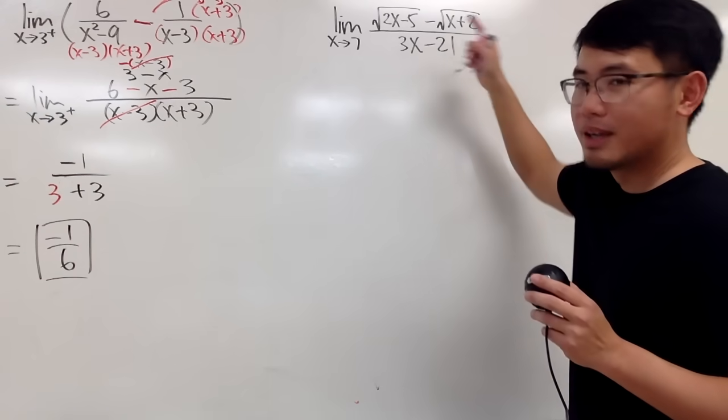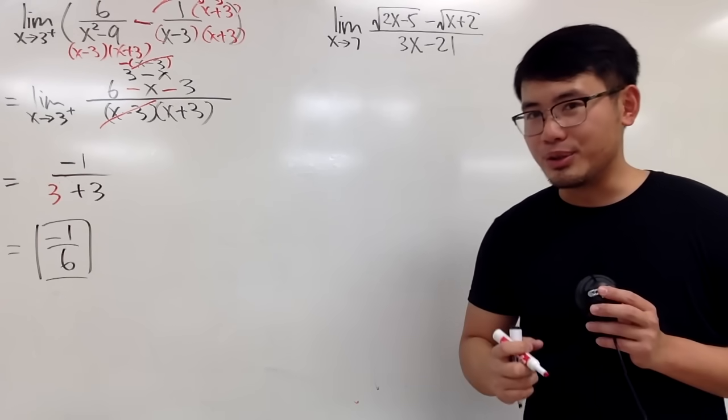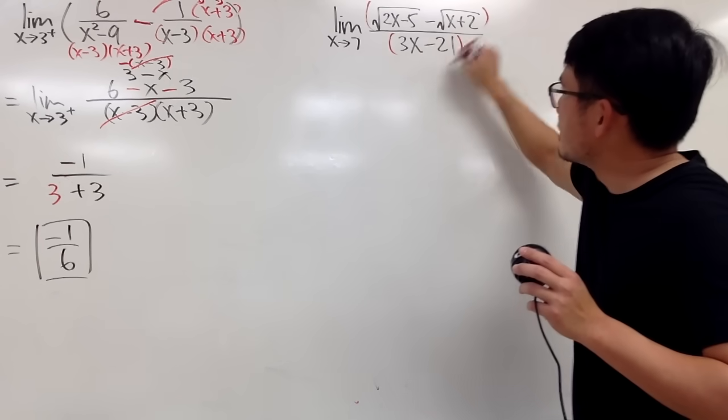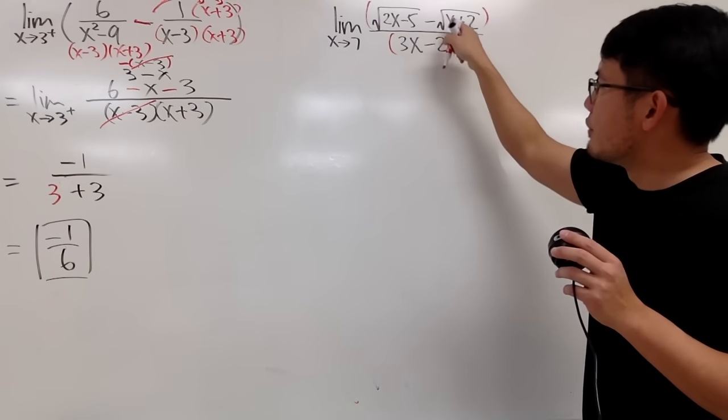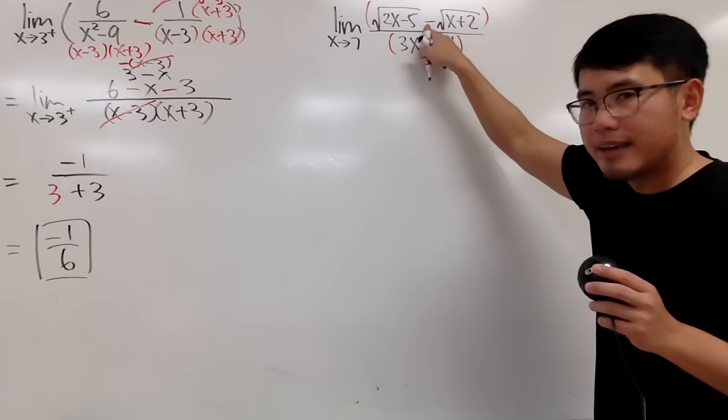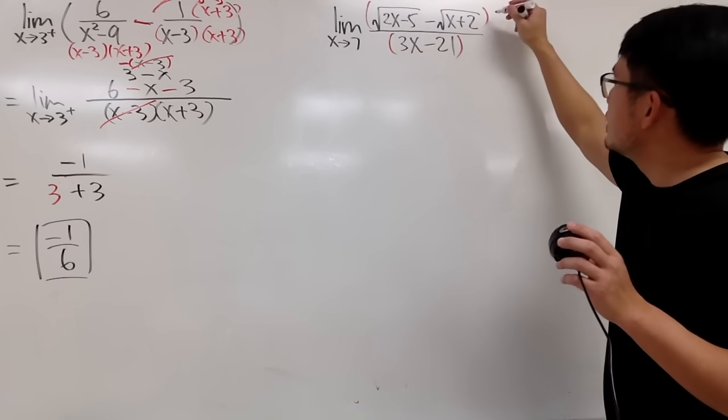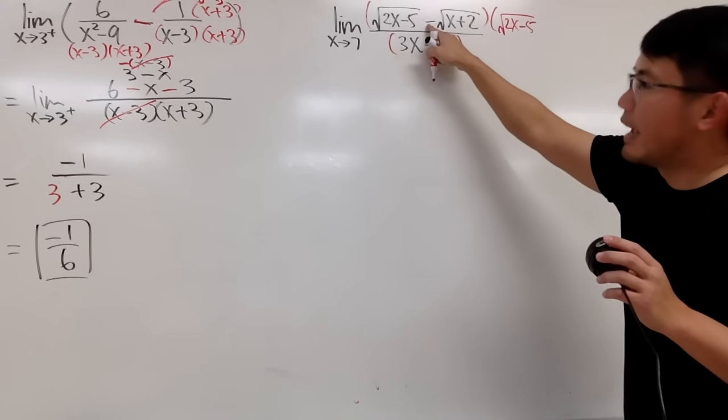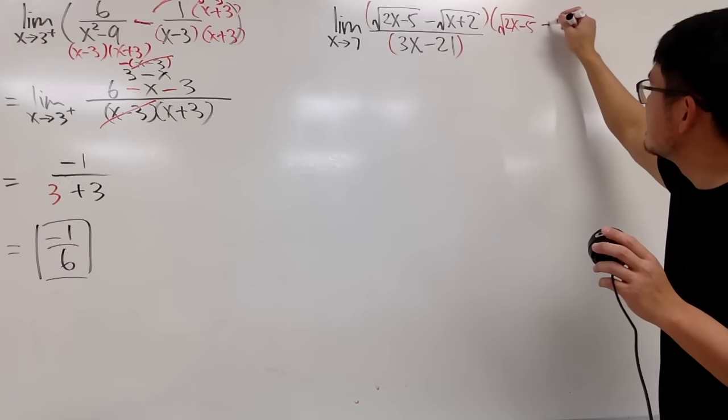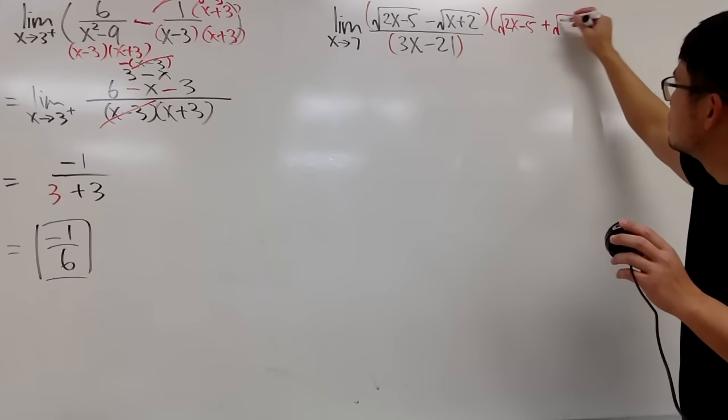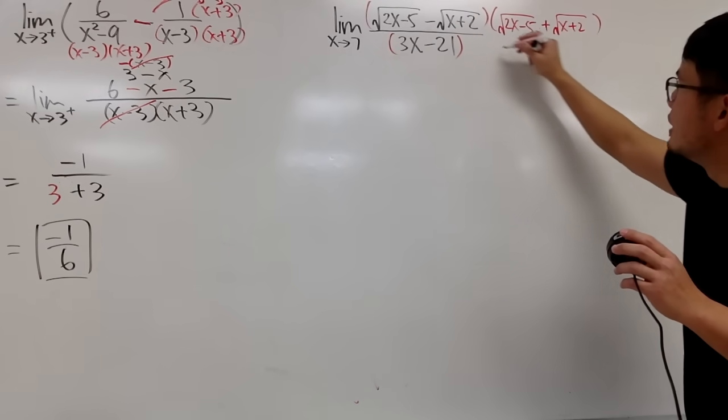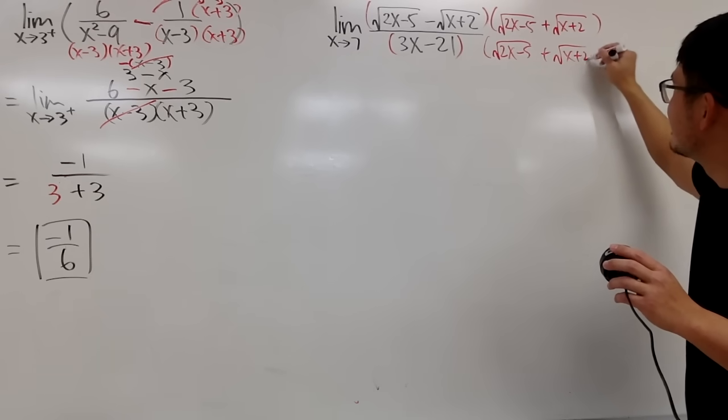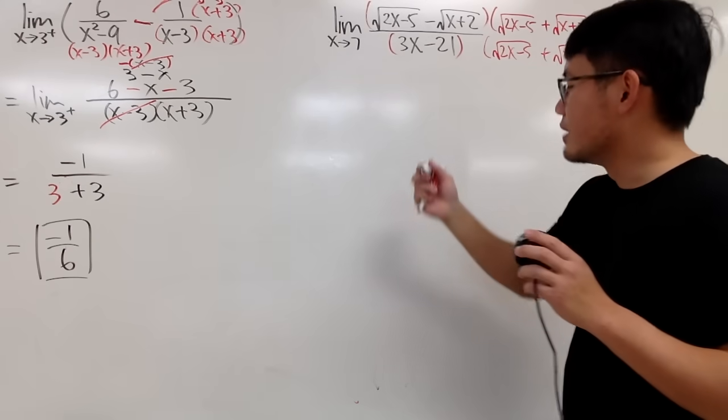Let me just multiply the top and the bottom by the conjugate of the top. Namely, you just change the minus to a plus. In other words, you just multiply by square root of 2x minus 5. And then this becomes a plus. And you keep that square root of x plus 2. And you do the same thing on the bottom. So this is what we have. And then we continue.